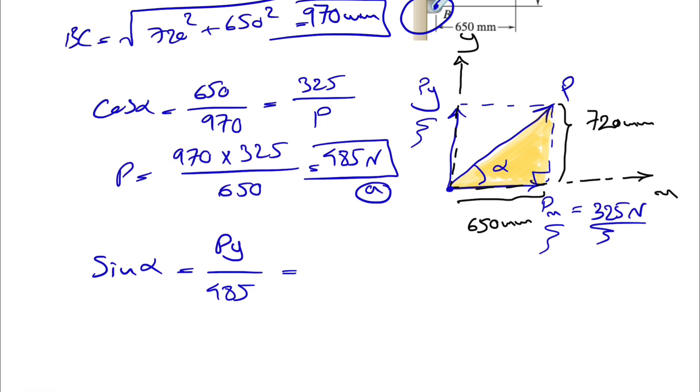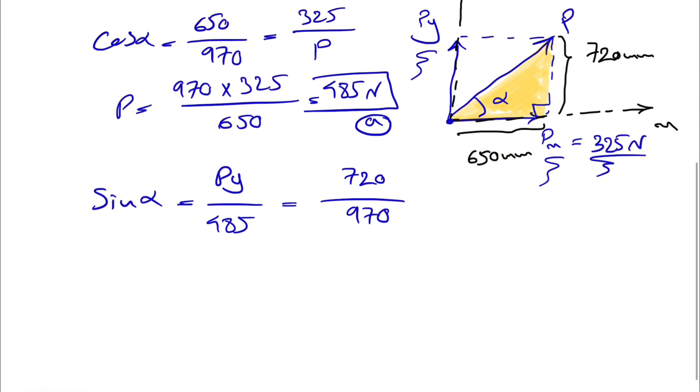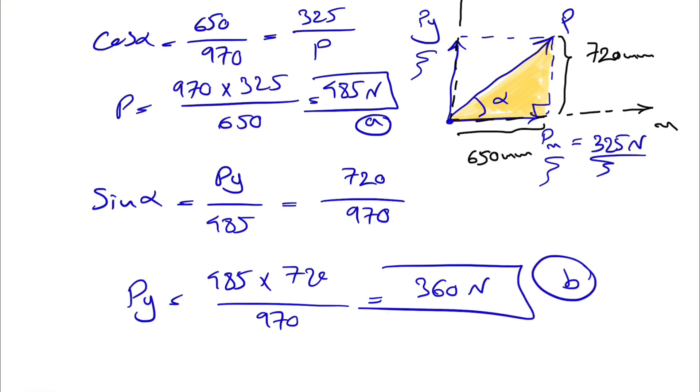If that's the case, we will have the opposite, which is 720 divided by hypotenuse, which we found in the beginning, which was 970. Our P_y will be 485 times 720 divided by 970, and this would give us 360 Newton. That would be the B part of the question.